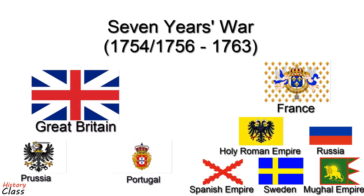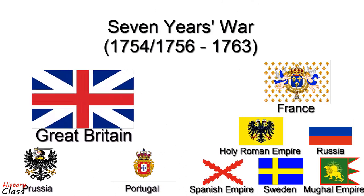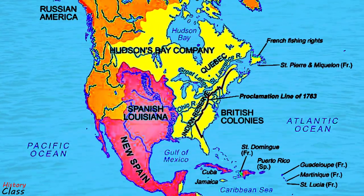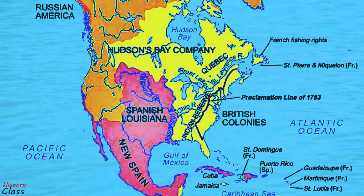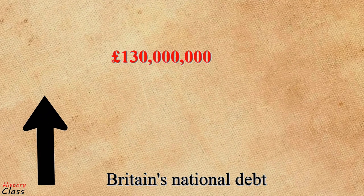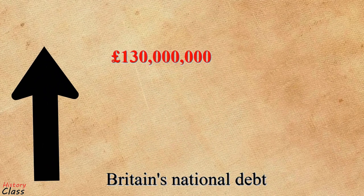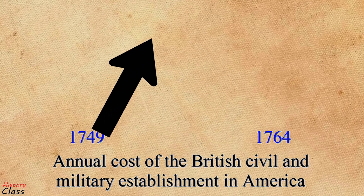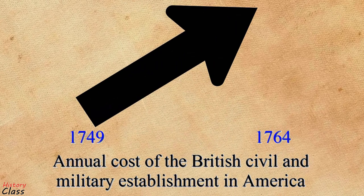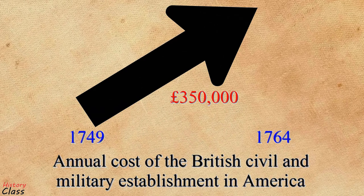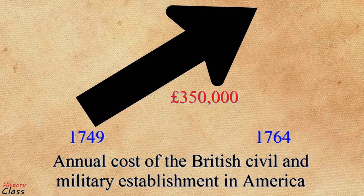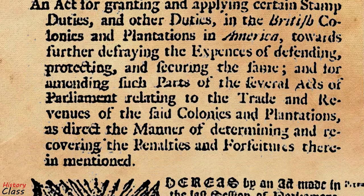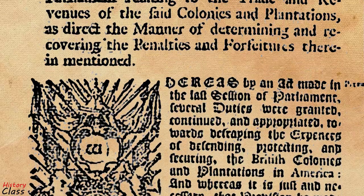The close of the Seven Years' War in 1763 saw Great Britain triumphant in driving the Kingdom of France from North America, but heavily in debt. Britain's national debt at the end of the war had doubled to £130 million, and the annual cost of the British civil and military establishment in America in 1764 was £350,000 — five times the cost of 15 years earlier. Parliament passed the Stamp Act in March 1765, which imposed direct taxes on the colonies for the first time.